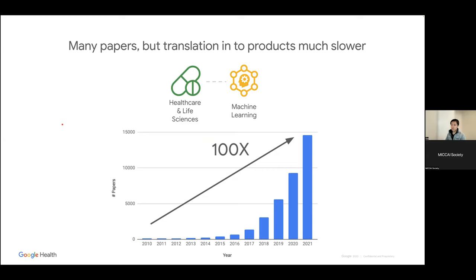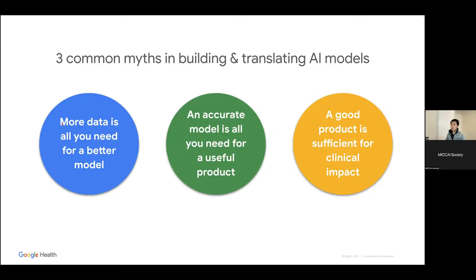There are a few barriers to real-world deployment. I'll stream some lessons into a narrative around three myths. First: more data produces a better model — more data does help, but that's not the end of the story. Second: an accurate model is all you need to create a useful product — unfortunately, that's also not the case. Third: creating a good product means people will use it in the system — unfortunately, that's also not the case.